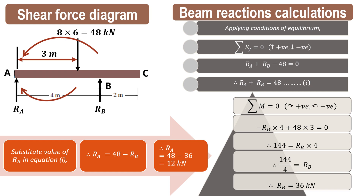Therefore Rb = 144 ÷ 4 = 36 kN. From equation 1, Ra = 48 − Rb = 48 − 36 = 12 kN. So the beam reactions are Ra = 12 kN and Rb = 36 kN.